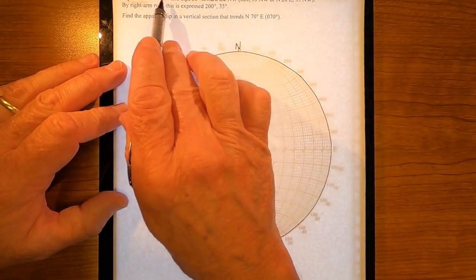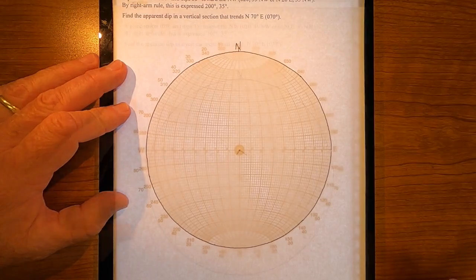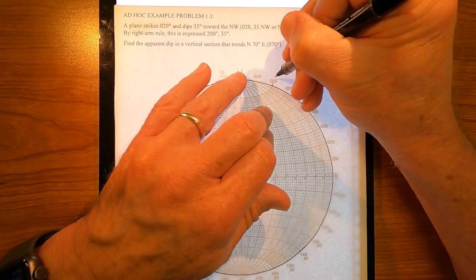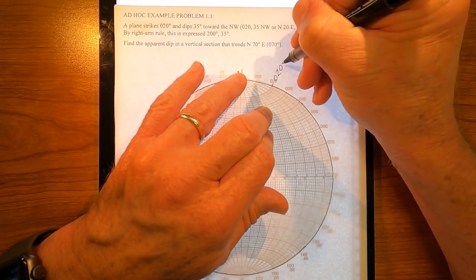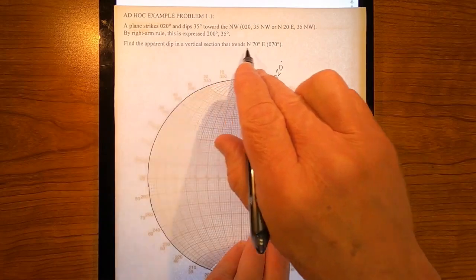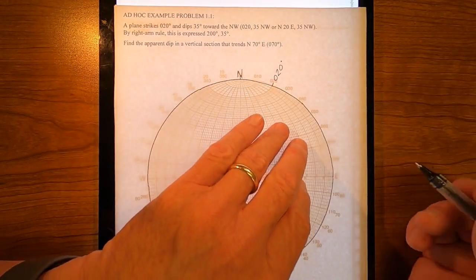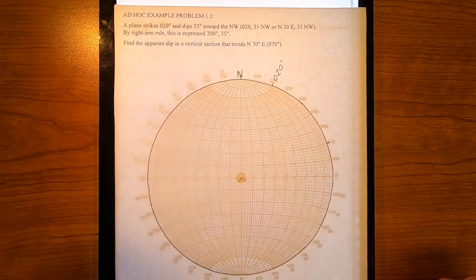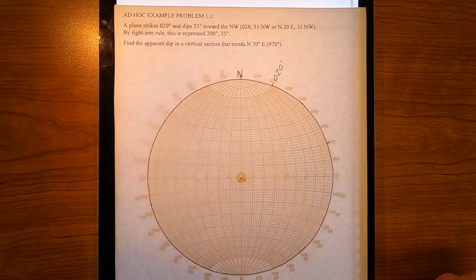I read the problem. It says the strike is zero seven zero degrees. I mark zero seven zero. That's right there. I mark zero, seven, zero. But something's gonna become apparent here.